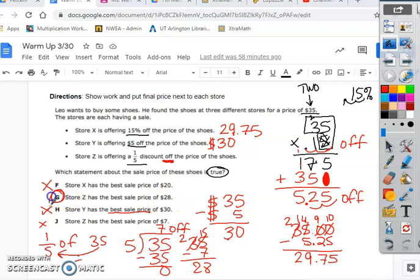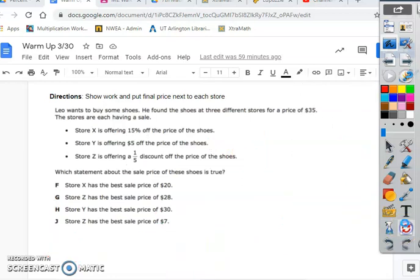So, the best one is G. So, you have to be real careful here with the wording and double-check your numbers because we can easily see that's seven, right? That makes us think it's this one, but that's not the sale price. So, our answer is store Z, which is G, which is also the lowest of the three prices.